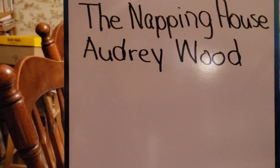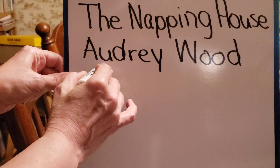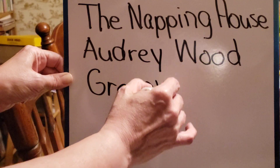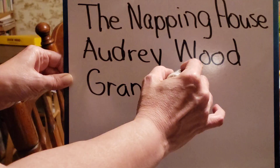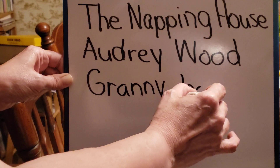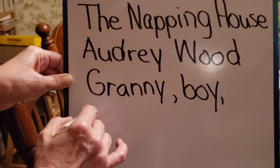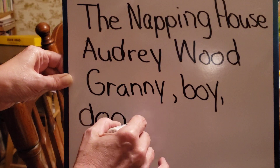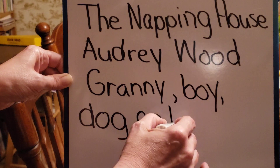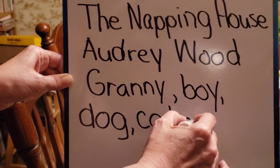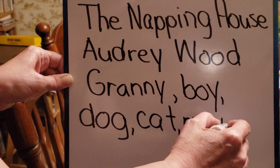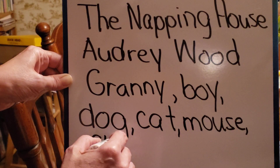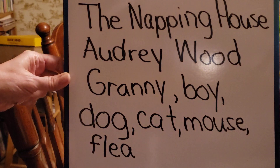But I can write down the names of all the characters in my book. I would start with Granny — capital G-R-A-N-N-Y. Boy — B-O-Y. Dog — D-O-G. Cat — C-A-T. Mouse — M-O-U-S-E. And flea — F-L-E-A. Those are my characters.